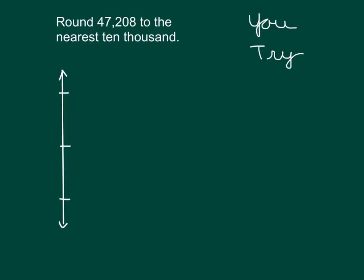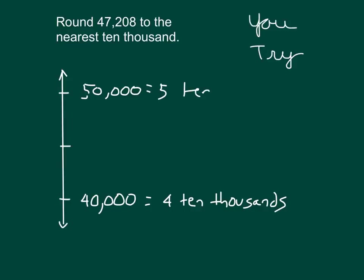For the lower endpoint, did you say 4 ten thousands, which is also equal to 40,000? For the upper endpoint, then, that would be 5 ten thousands, which is also equal to 50,000. One more ten thousand added to the lower endpoint is equal to 5 ten thousands or 50,000.